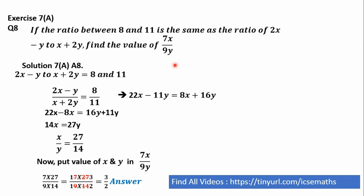So now after putting the value of x and y in 7x by 9y, we will be getting 7 into 27, x is 27, and 9 into 14 because y is equal to 14. Then if we can solve this by canceling, 7 and 14, and 9 and 27, this is how we will be getting 3 by 2 and that is our answer.